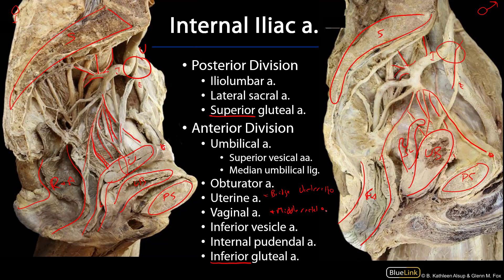The terminal branches of the internal iliac are the internal pudendal and the inferior gluteal arteries. The inferior gluteal artery is going off to supply blood to the hip, while the internal pudendal artery is going off to be the dominant blood supply to the perineum.